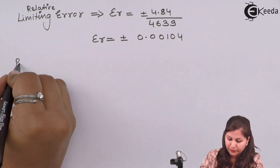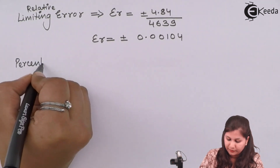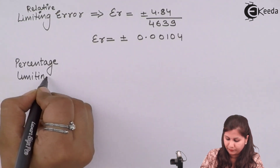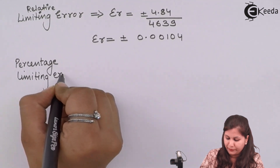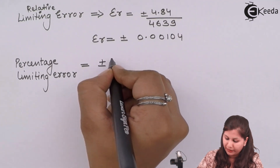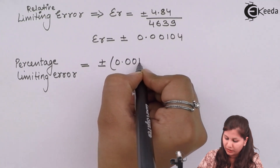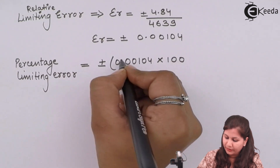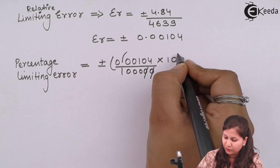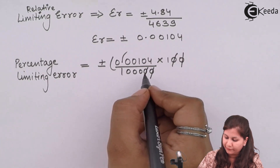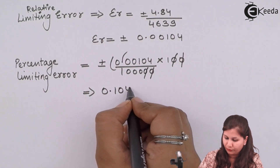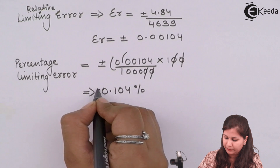To find the percentage limiting error, we multiply the relative limiting error by 100: ±0.00104 × 100 = ±0.104%. This is the percentage limiting error.